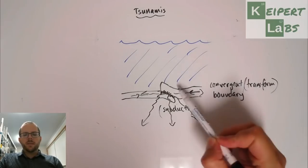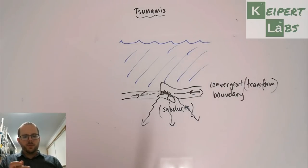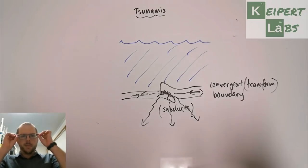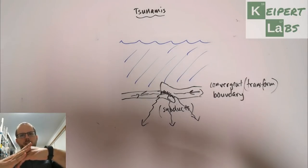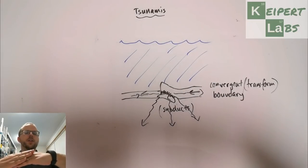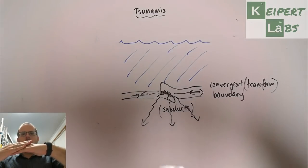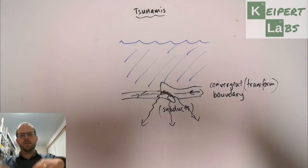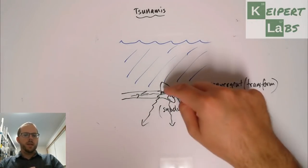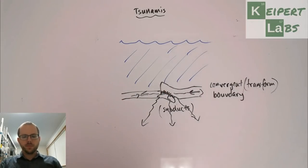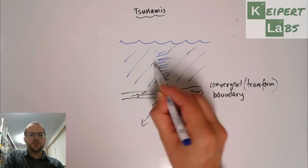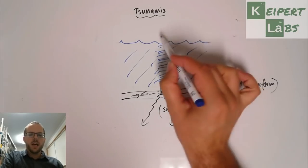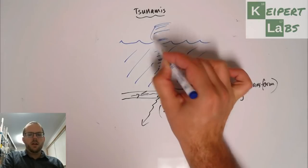These plates kind of move past each other, they catch, and then all of a sudden you get this release. It's like the flick of a mousetrap or a spring that all of a sudden pops up. One of the plates moves up quite quickly, and that gives you a shockwave that travels out through the ocean — but particularly the shortest distance is up to the surface — and pushes this water up.